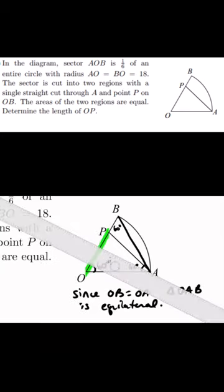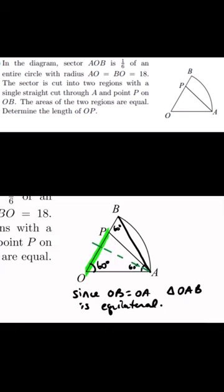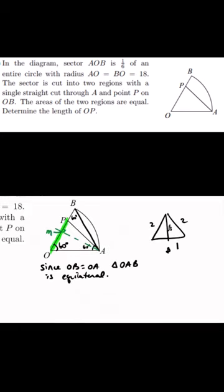Dropping a perpendicular from A to OP at point M, we form two triangles that must be in a ratio of 1 to 2 to root 3. Since the equilateral triangle sides are 18, AM is equal to 9 root 3.